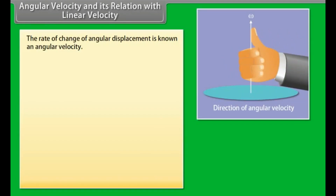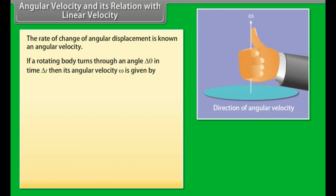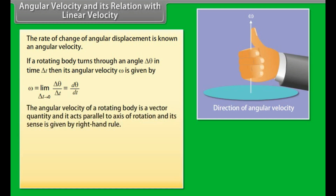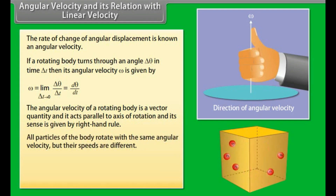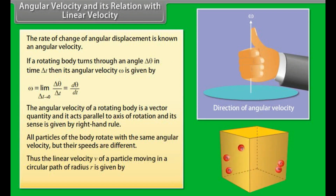The rate of change of angular displacement is known as angular velocity. If a rotating body turns through angle Δθ in time Δt, then angular velocity ω = lim(Δt→0) Δθ/Δt = dθ/dt. Angular velocity is a vector quantity acting parallel to the axis of rotation, with sense given by the right-hand rule. All particles rotate with the same angular velocity, but different linear speeds. The linear velocity v of a particle at radius r is v = r·ω.